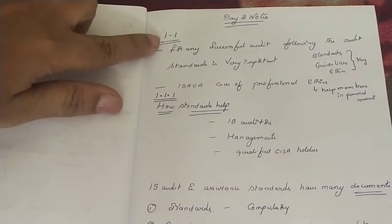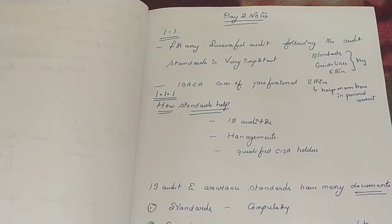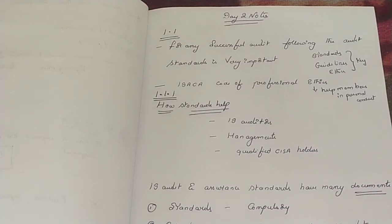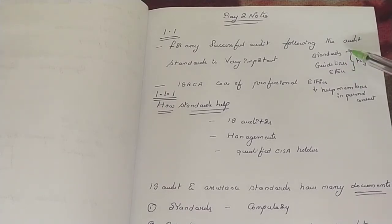Today is session 1.1 in the CRM — that is IS Audit Standards, Guidelines, and Code of Ethics. Under that, these are some important points. For any successful audit that we do when we go to an organization, following the audit standards is very important. Without that, if you do an audit, it will be a big mistake and it will cost you more. As per ISACA, there are three important keywords: standards, guidelines, and ethics.